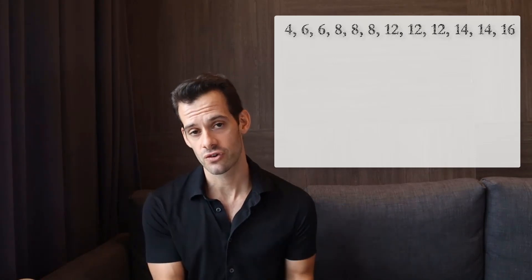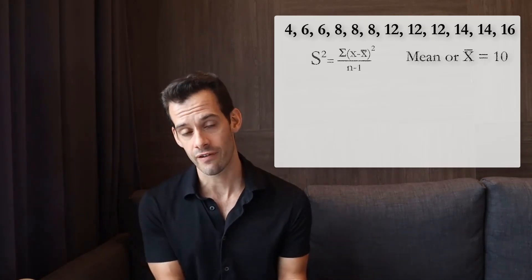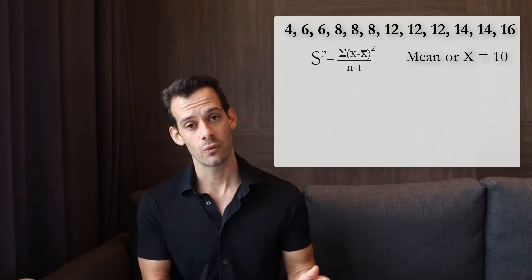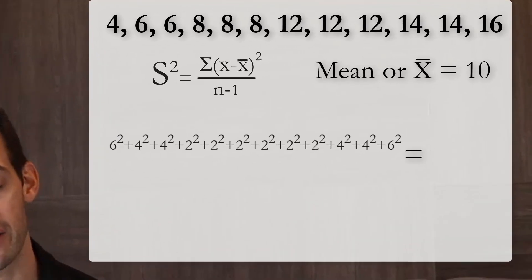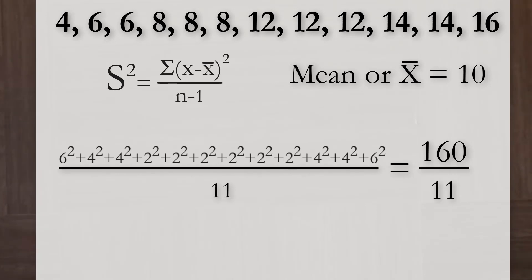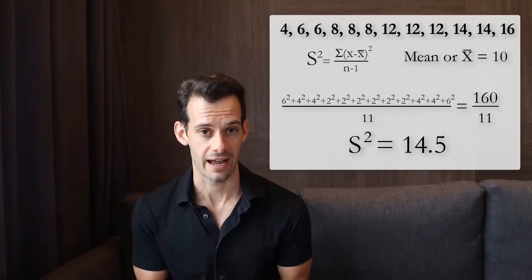Let's practice calculating the variance using our set of scores. We take all of our deviations from the mean and square them, then get the sum of squared deviations by adding all of those up, which gives us 160. Then we divide by n−1, which in our case is 11, and that gives us a variance of about 14.5.